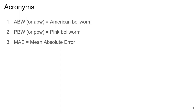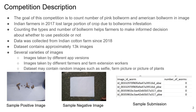Let's start with some acronyms. ABW is American Ball Worm, PBW is Pink Ball Worm, and MAE is Mean Absolute Error, which is the evaluation metric for this competition.